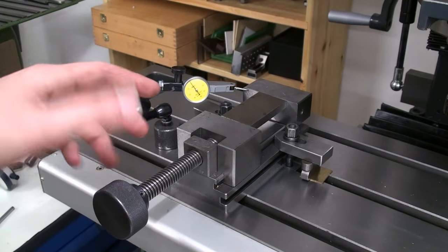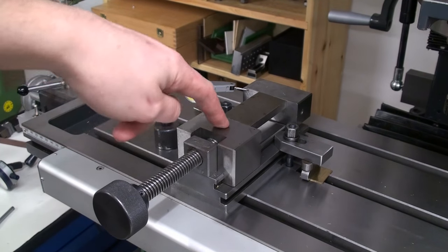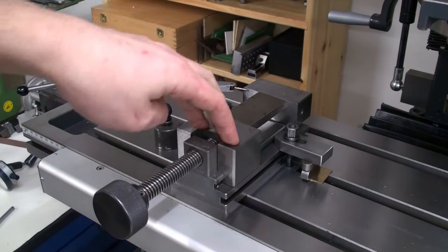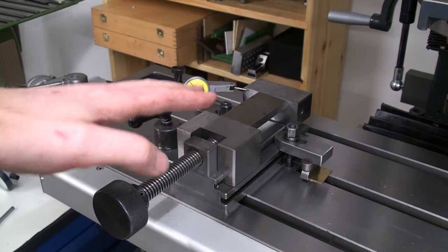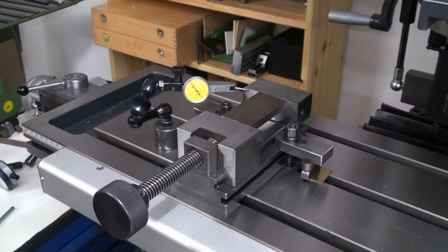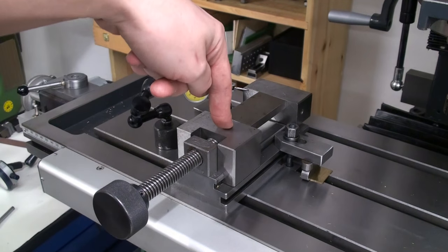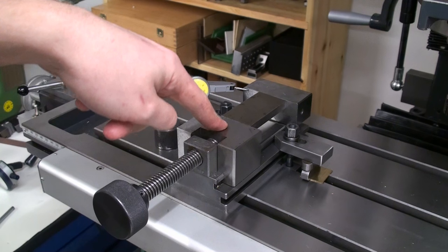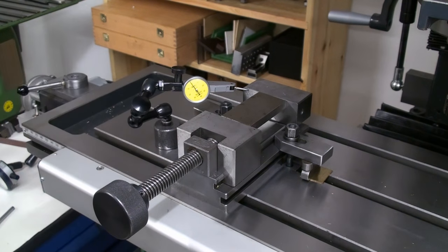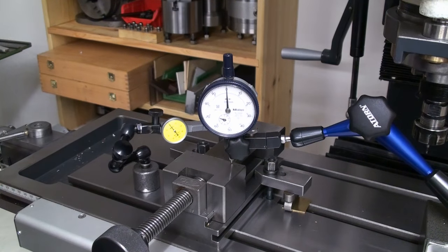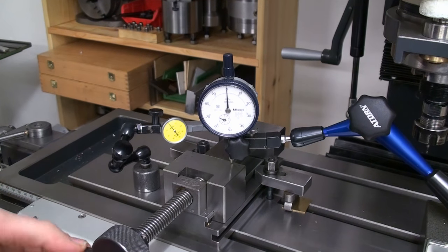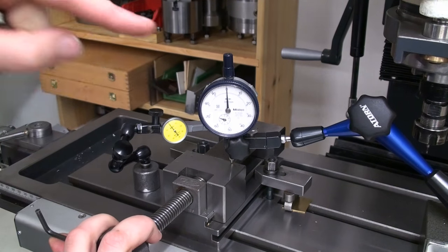But what will be interesting on this vise is the jaw lift. This vise is not an import—yeah, it is an import, but it's Japanese, so it should be pretty high quality. And I expect some lift from the movable jaw but not as much as the shaper vise. Okay, there we go. Both indicators set up, and we're going to tighten down. Watch both dial indicators.